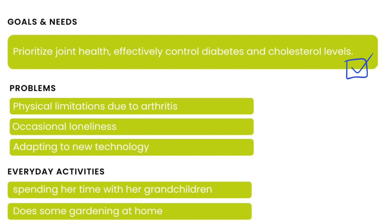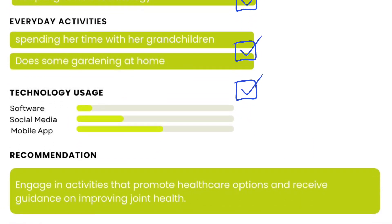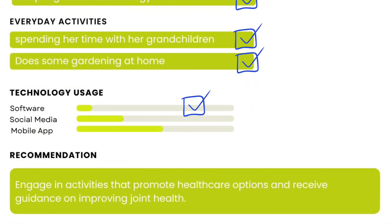Her goals and needs are to prioritize joint health as well as properly controlling diabetes and cholesterol levels. The problems she faces are due to physical limits caused by arthritis, occasional loneliness, and adjusting to new technology. Her daily activities include spending time with her grandchildren and gardening at home. Her software utilization is barely 10%, social media is 30%, and mobile apps are 55%.